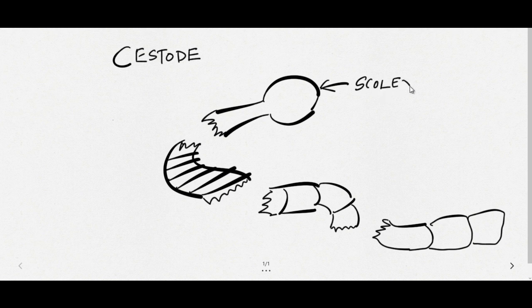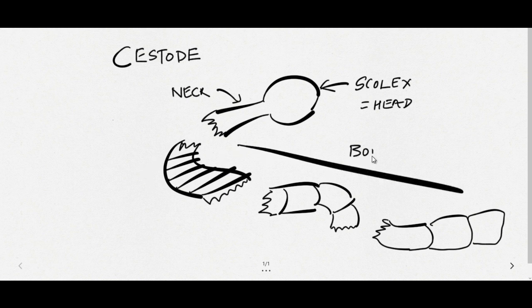They do not have any kind of body cavity. The head is also known as scolex. The neck, the length may vary. And the rest of the portion is body, or also known as trunk, but the scientific name is strobila.